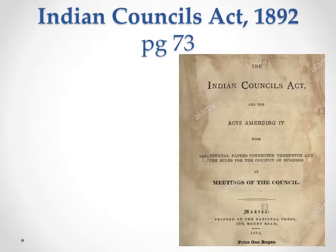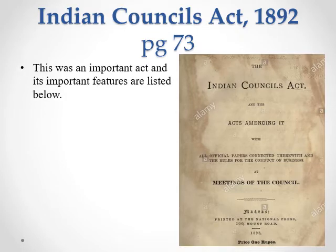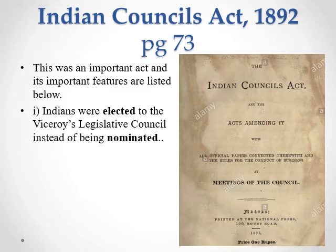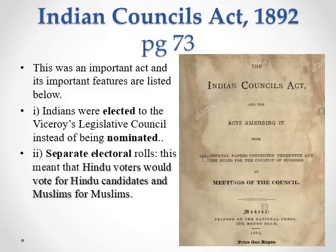On the same page 73 you can see the heading of the Indian Council Act 1892. This was an important act. Its important features include: first, Indians were elected to the Viceroy's Legislative Council instead of being nominated. Second, there were separate electoral rules — this meant that Hindu voters would vote for Hindu candidates and Muslims for Muslim candidates.